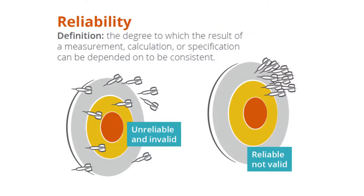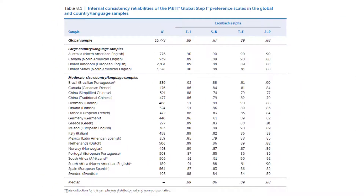In addition to looking at items, we also look at the reliability of the measure. Reliability is really about consistency of measurement, and there are a variety of ways to look at it. We tend to focus on test-retest reliability as well as internal consistency reliability. As the slide shows, reliability is a precursor to validity — if something is unreliable, it can't be valid, and if something is reliable, that doesn't necessarily mean it's valid. This slide shows the internal consistency reliability estimates for the MBTI global assessment across all these different countries, asking whether it works reasonably well across different places.